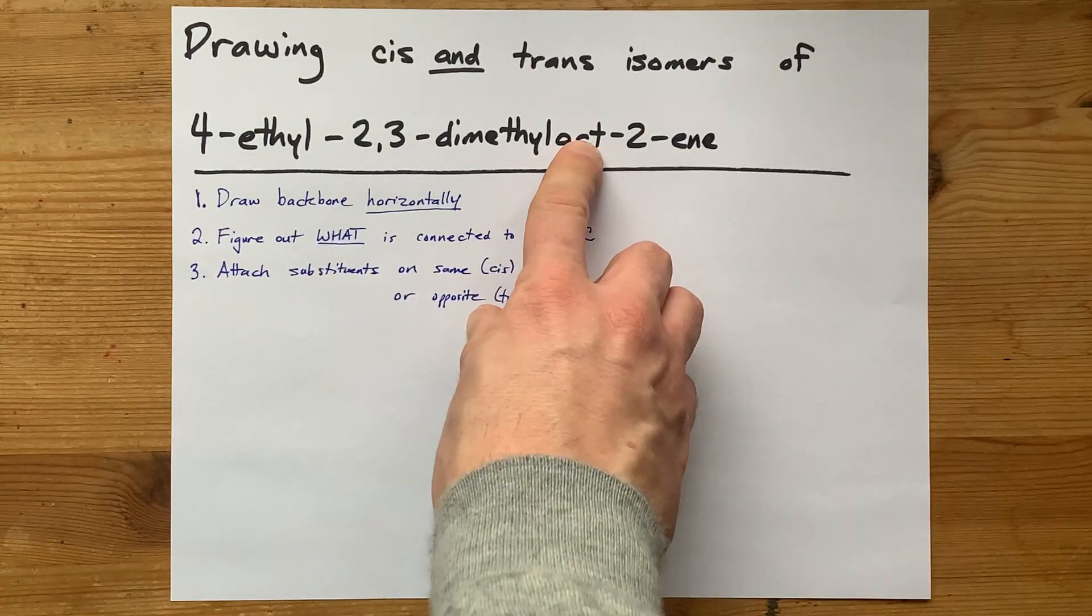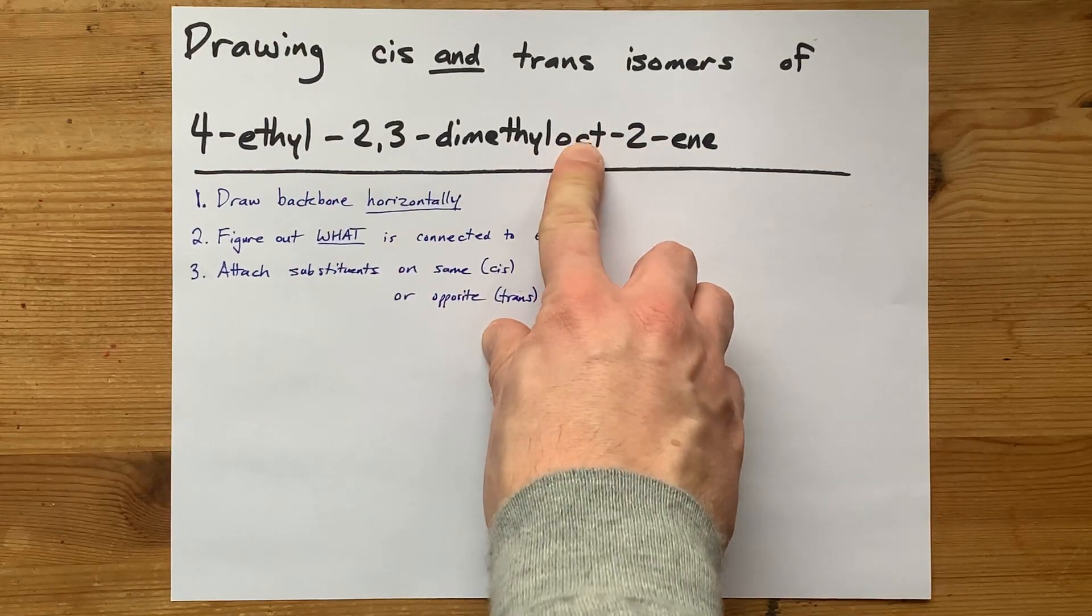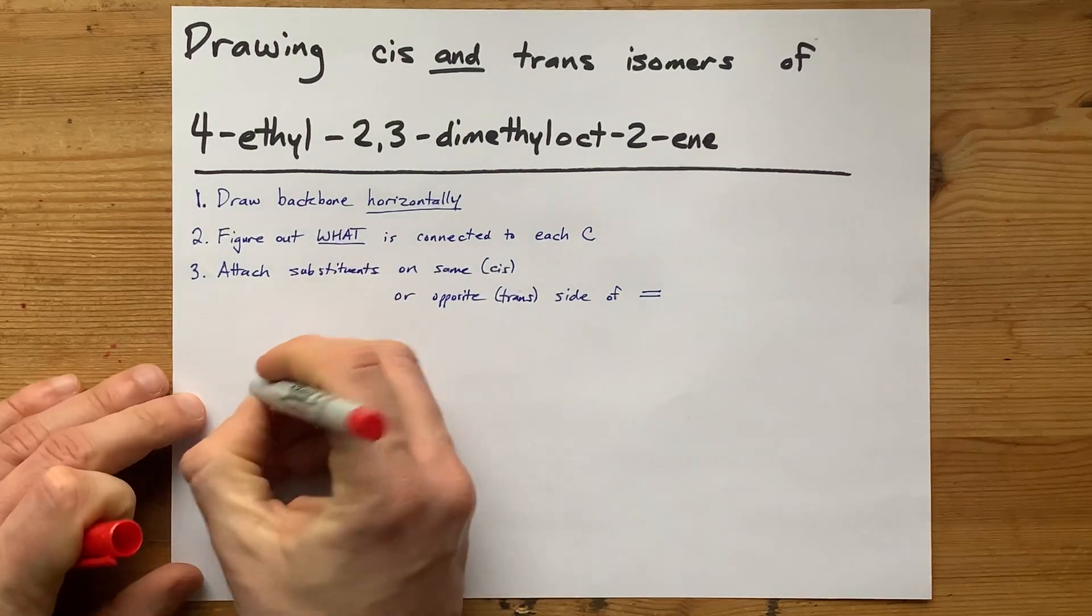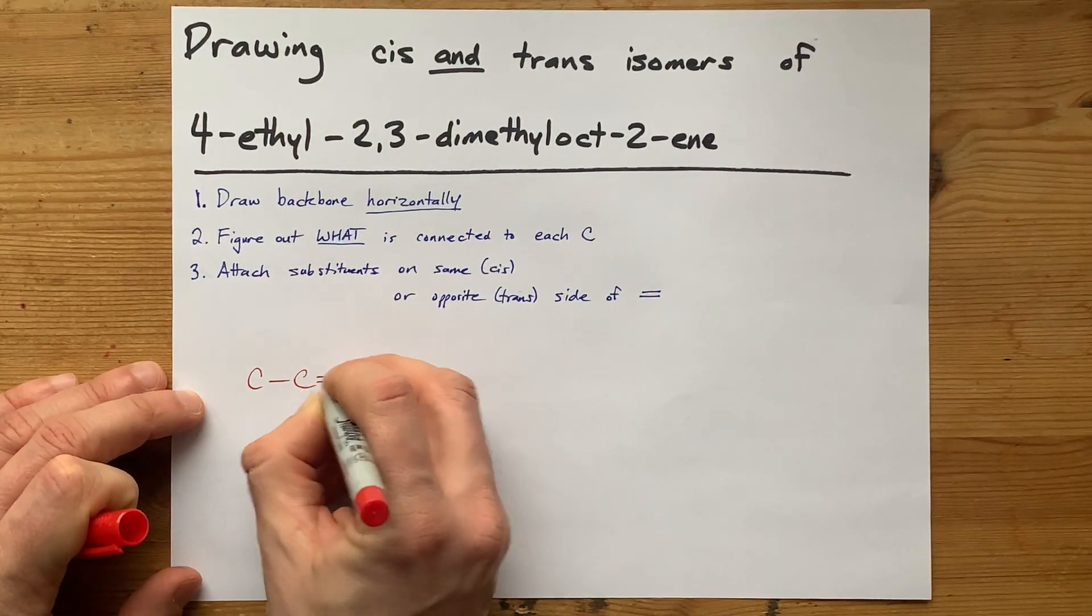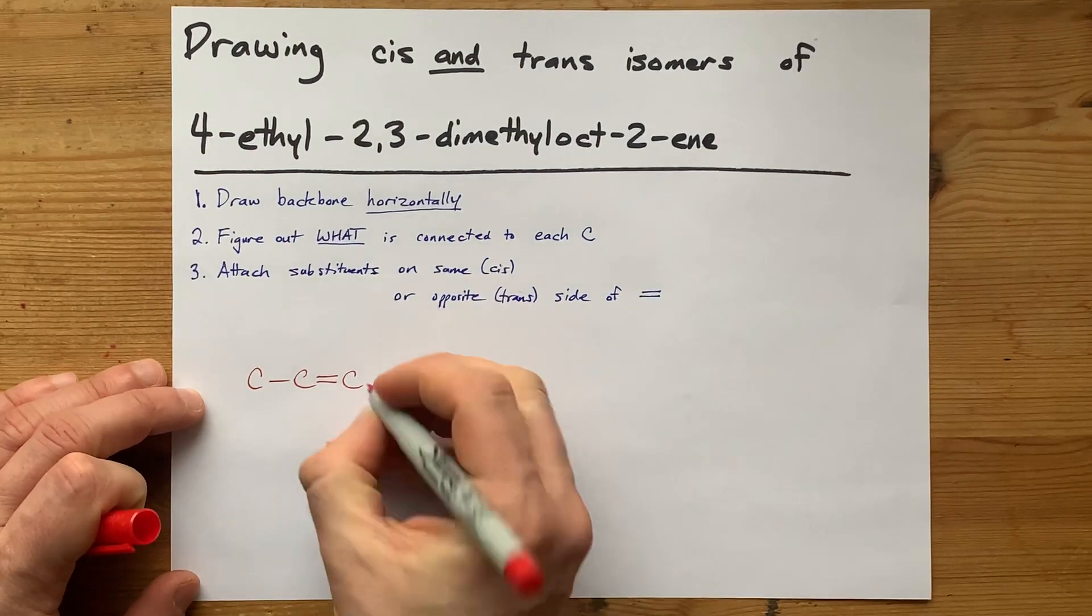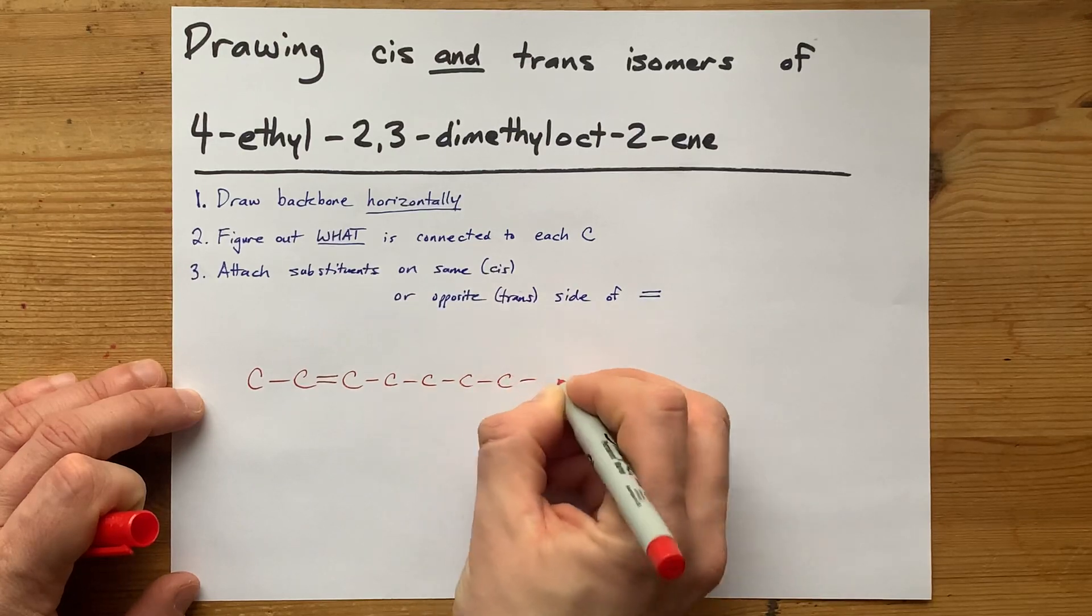The backbone here is oct-2-ene, which means we have an eight-carbon chain with a double bond starting at carbon two. So one, two, that's carbon two, so that's where the double bond starts. That's one, two, three now. Four, five, six, seven, eight.